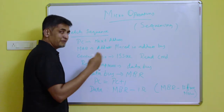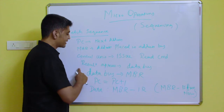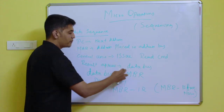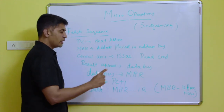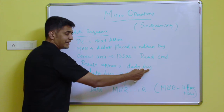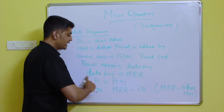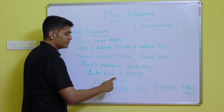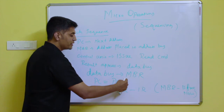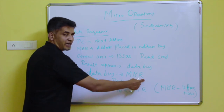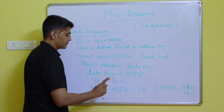Because of that read command, the data will appear on the data bus. That data from the data bus will then be placed in the MBR, that is the Memory Buffer Register.